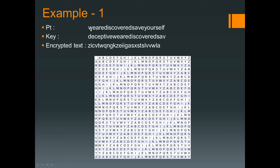Now you have to use the tableau or tabula recta to encrypt the plain text. For example, the first character of the plain text is 'w' and the corresponding key character is 'd'. Find 'w' row-wise — w is here — and find 'd' column-wise: a, b, c, d — d is here. So for the plain text you go row-wise, and for the key you go column-wise. The intersection gives the first encrypted element: z.